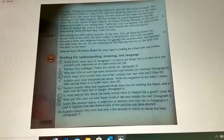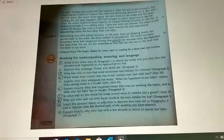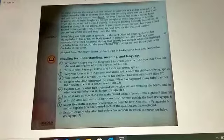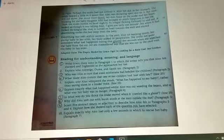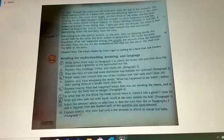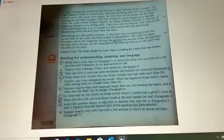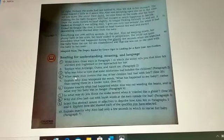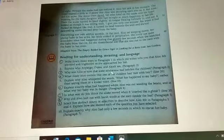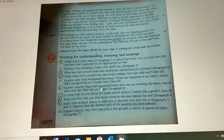There are some questions are purely implicit or explicit, but there are some in which they are both type of clues. Okay. What made Alu certain that one of her children had met with fate? This is purely implicit question because you have to see that how did Alu know that something bad has happened with her children?